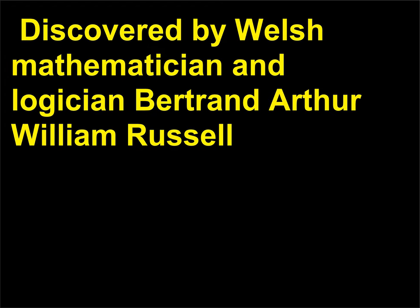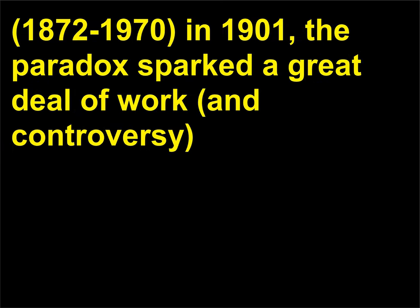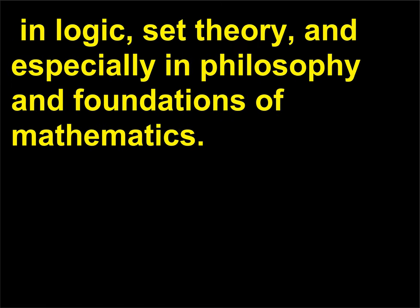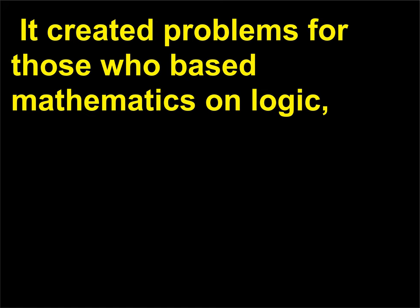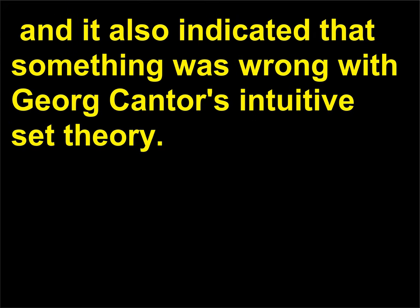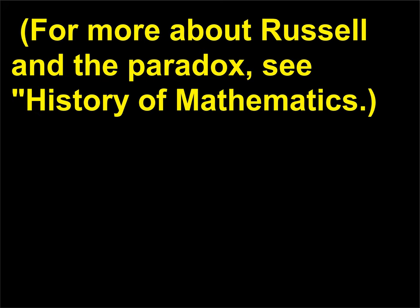Discovered by Welsh mathematician and logician Bertrand Arthur William Russell (1872–1970) in 1901, the paradox sparked a great deal of work and controversy in logic, set theory, and especially in philosophy and foundations of mathematics. It created problems for those who based mathematics on logic, and it also indicated that something was wrong with George Cantor's intuitive set theory. For more about Russell and the paradox, see History of Mathematics.